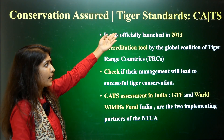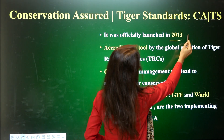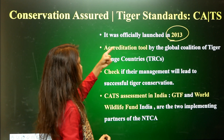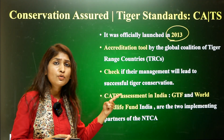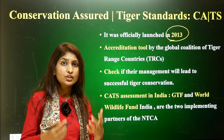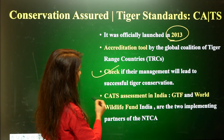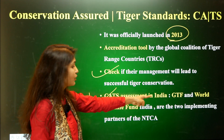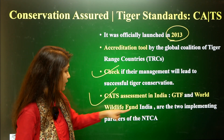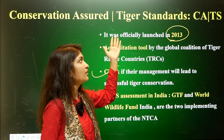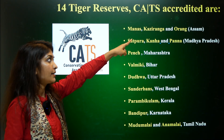Conservation Assured Tiger Standards (CATS) is an accreditation tool officially launched in 2013 by the global coalition of tiger range countries. Its objective is to standardize the conservation measures undertaken by tiger reserves. CATS assessment in India is conducted jointly by the Global Tiger Forum and World Wildlife Fund India, working as partners to NTCA. Currently, 14 tiger reserves have CATS accreditation.